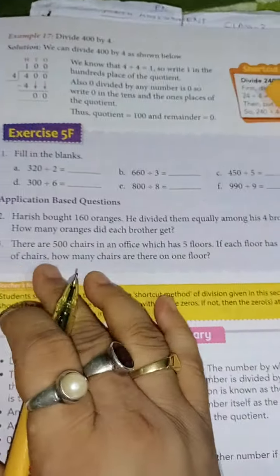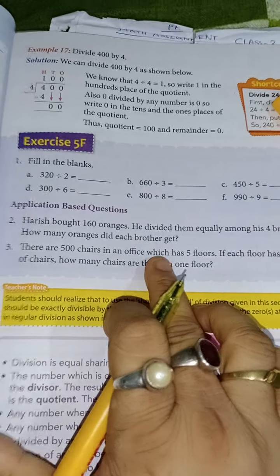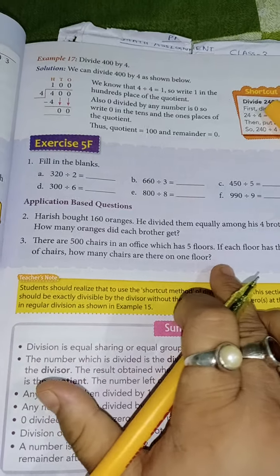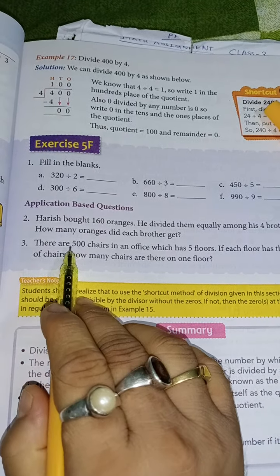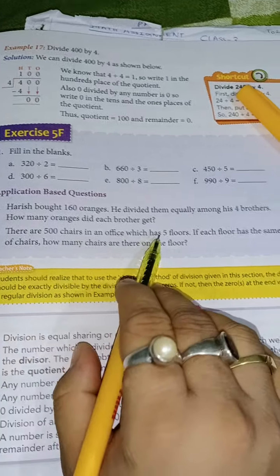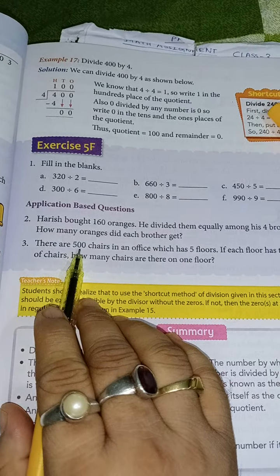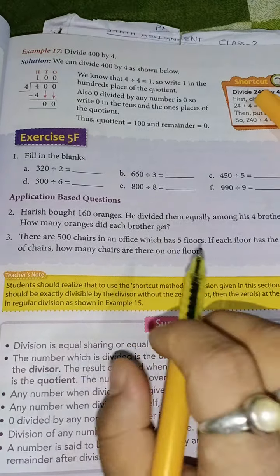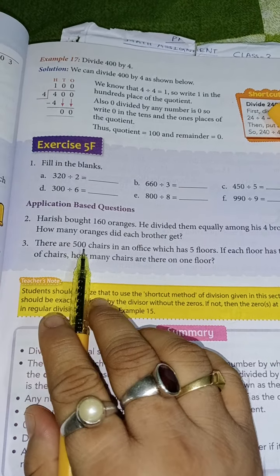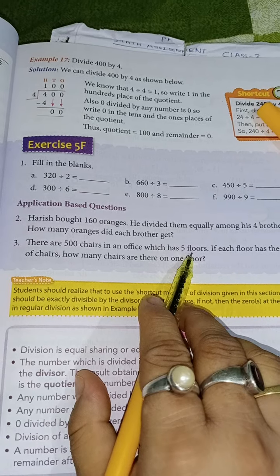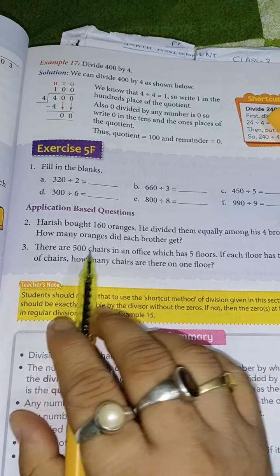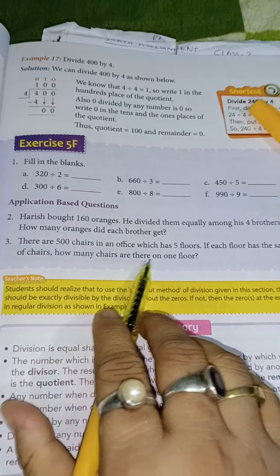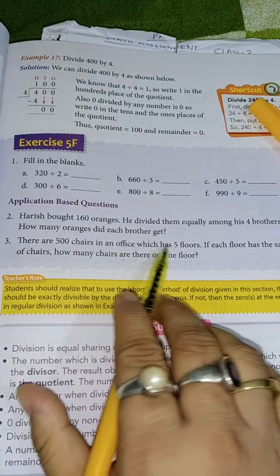Similarly if you see the last question, there are 500 chairs in an office which has 5 floors. If each floor has the same number of chairs, how many chairs are there on one floor? So total number of chairs 500, total number of floors 5. Now from these 500 chairs, equal number of chairs are placed in every floor. Then how many chairs are there in each floor? So number of chairs in each floor, 500 divided by 5. So this is same as number 2. You have to just first write how many chairs are there and how many floors are there, and then you will write number of chairs on one floor, 500 divided by 5.